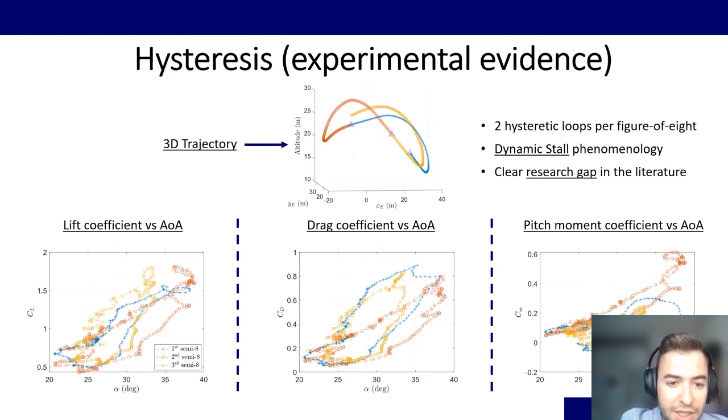With the purpose of checking if this hysteresis was a coincidence of those figures of 8, we checked other figures of 8. And in this case, we are showing a 1.5 figure of 8. We start with the blue one, we do a semi-figure of 8, and then we join with the red one, and finally the third semi-figure of 8 with the yellow one. We check that the three of them experience hysteresis, so they close themselves in the three longitudinal coefficients. We observe that for every figure of 8, we got two hysteretic loops, that's why we split into two halves every figure of 8.